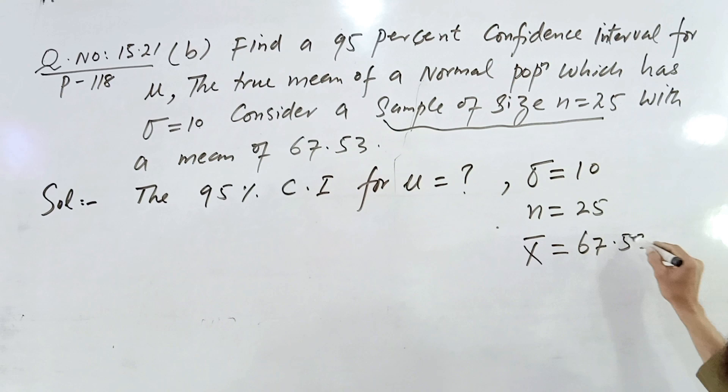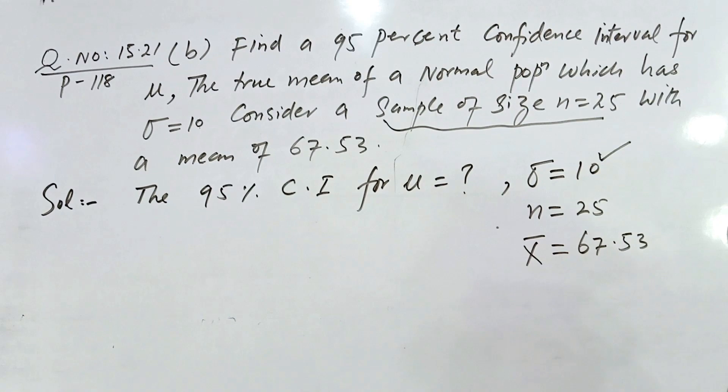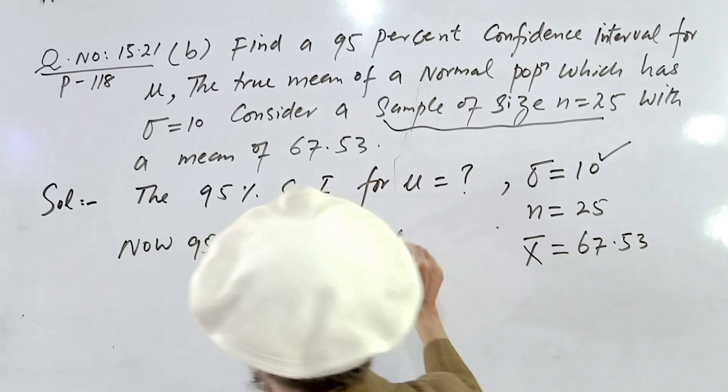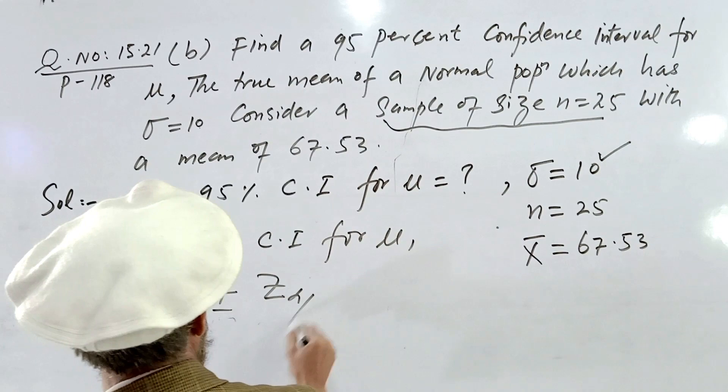Now, sigma is known but the sample size is less than 30. However, since sigma is known, we still use the Z distribution. The 95% confidence interval for population mean is X-bar plus or minus Z sub alpha over 2 times sigma divided by the square root of n.